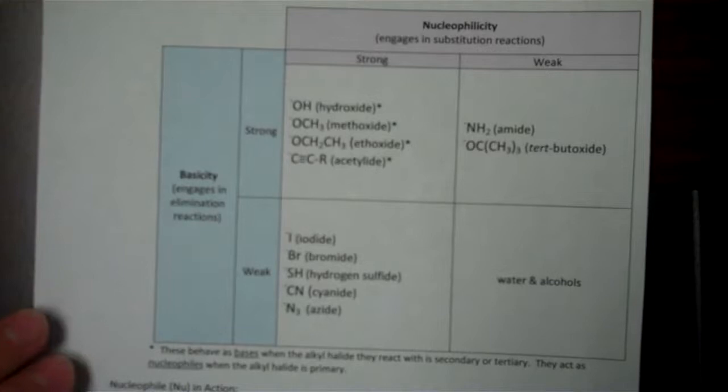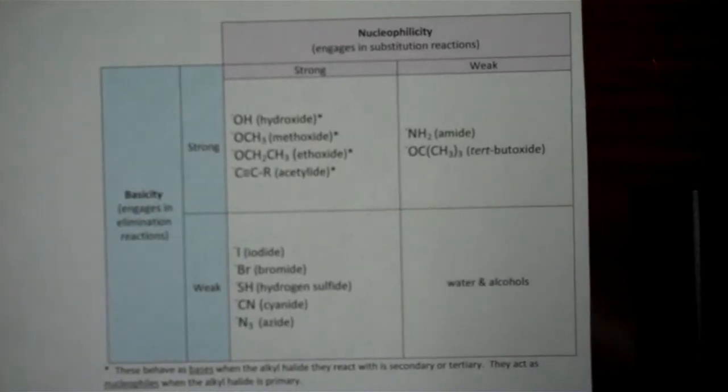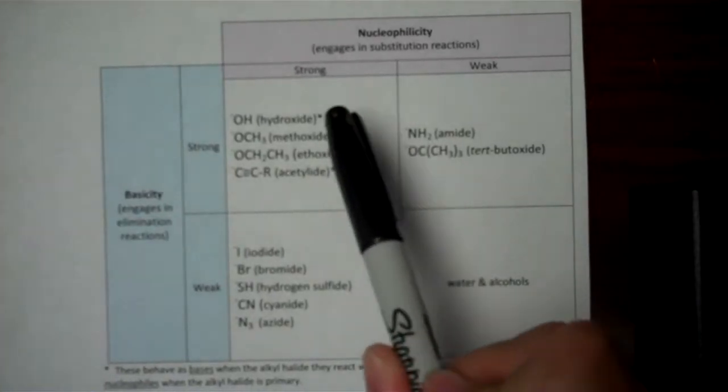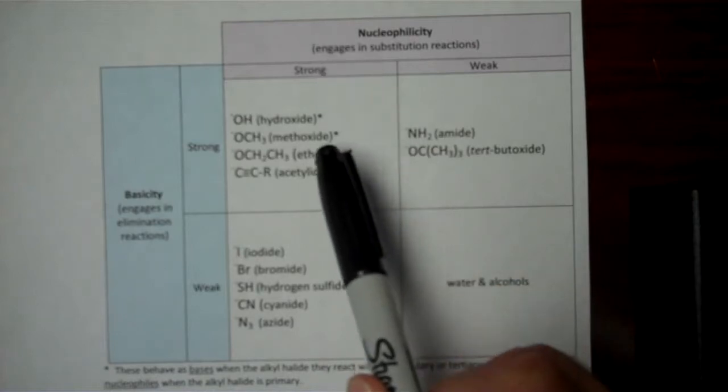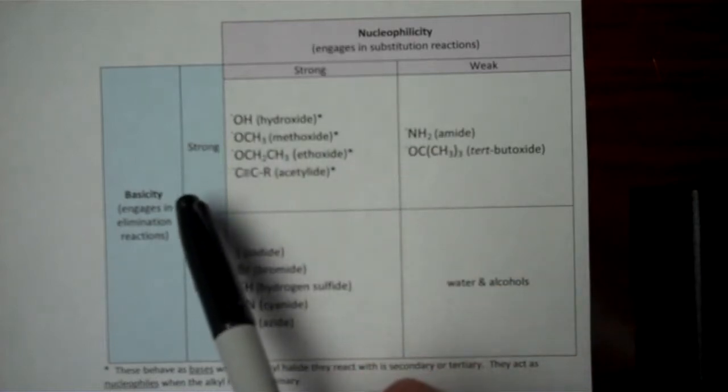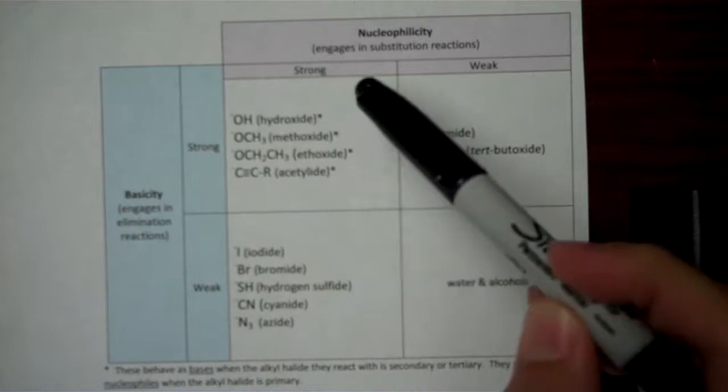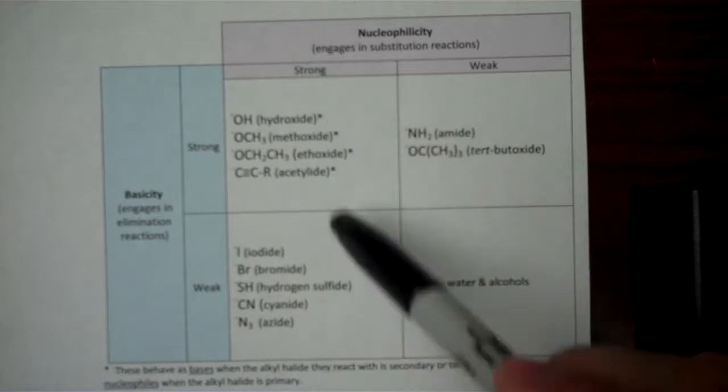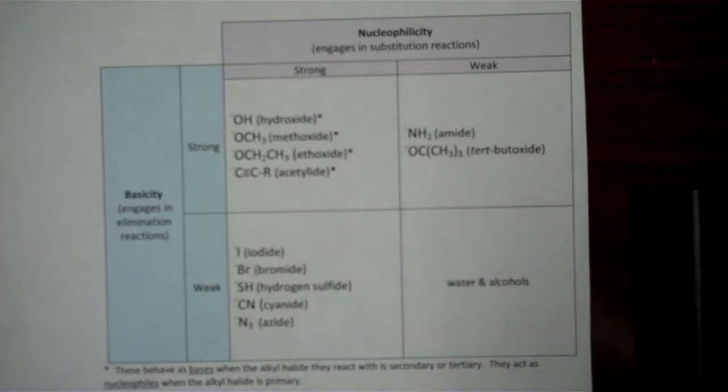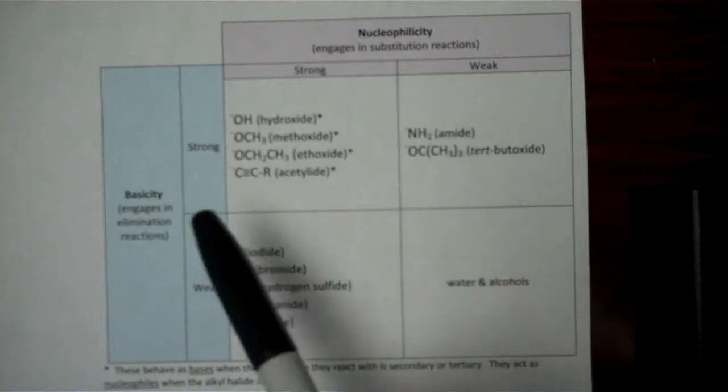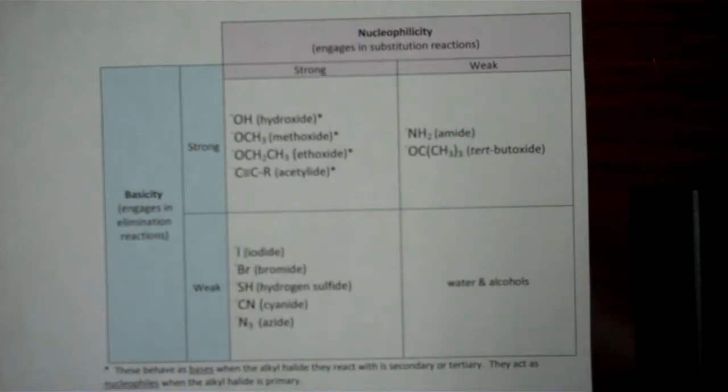You can see we've got some things that are listed as both strong nucleophiles and strong bases. So these substances like hydroxide, methoxide, we have to be careful when we're using those, either as a nucleophile or a base, we have to be careful that we are getting the kind of reaction we expect.